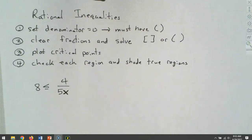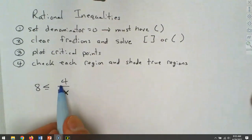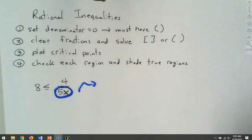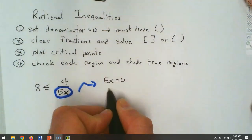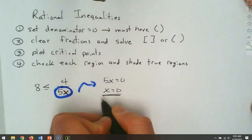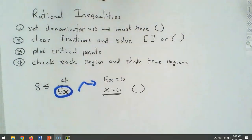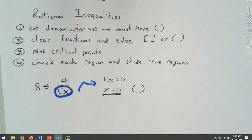The first thing we have to do is set our denominator to zero. So we've got 5x equals zero, giving us x equals zero. We want to label whether it gets brackets or parentheses at the very beginning — that one's going to have parentheses.